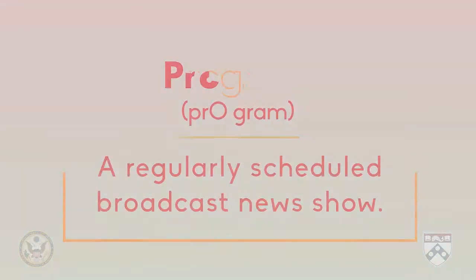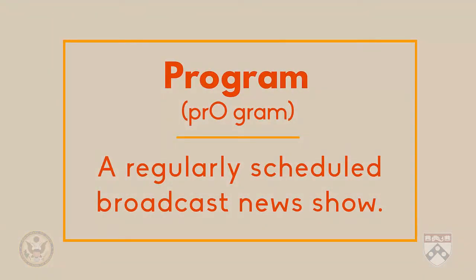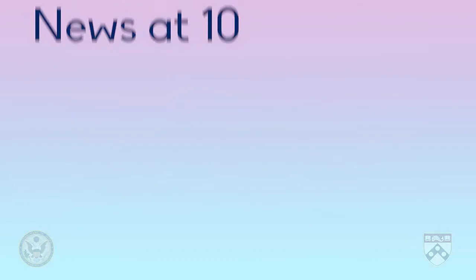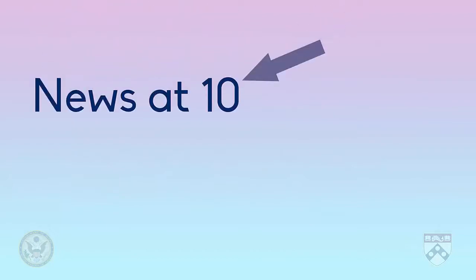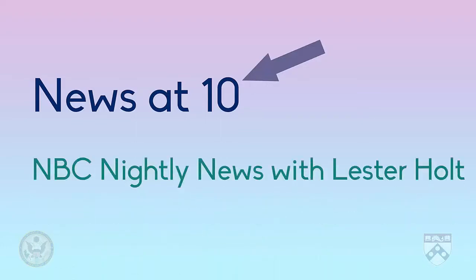For example, instead of creating a newspaper, television, radio, and internet shows are generally called news programs. A program is a regularly scheduled broadcast news show. Generally, these programs have names like News at 10, which tells you what time you can watch it every day. Another example is NBC Nightly News with Lester Holt, whose name reminds the viewer what channel they're watching and gives the name of the lead journalist.